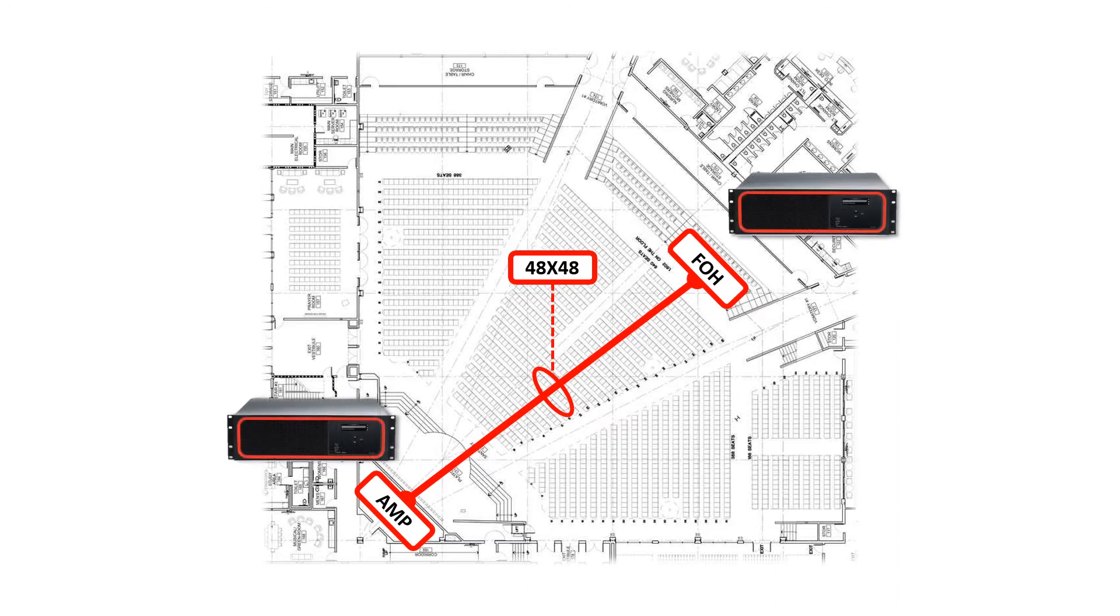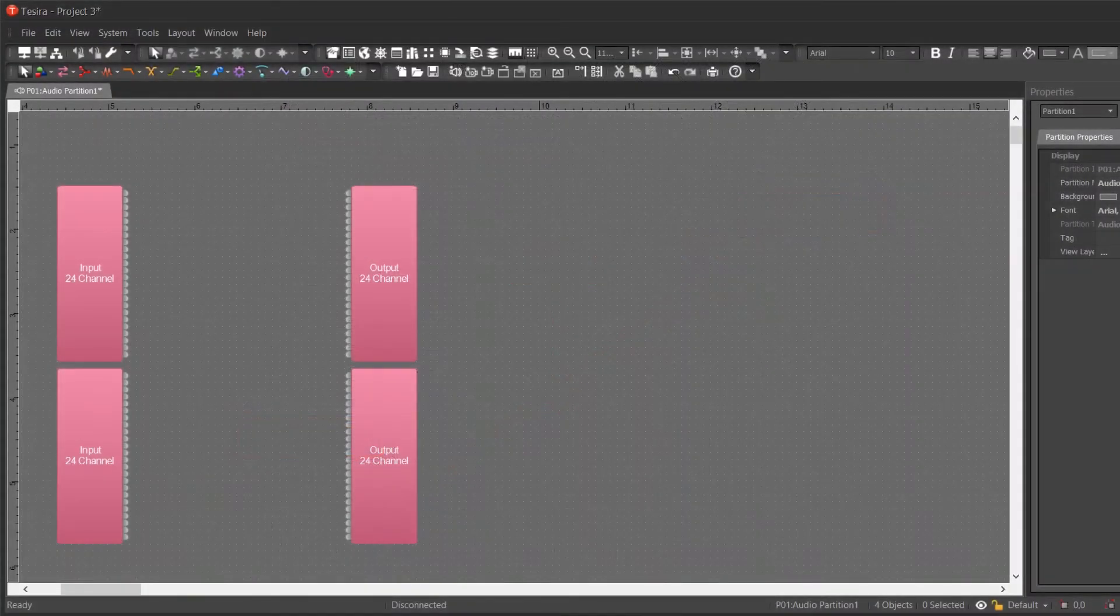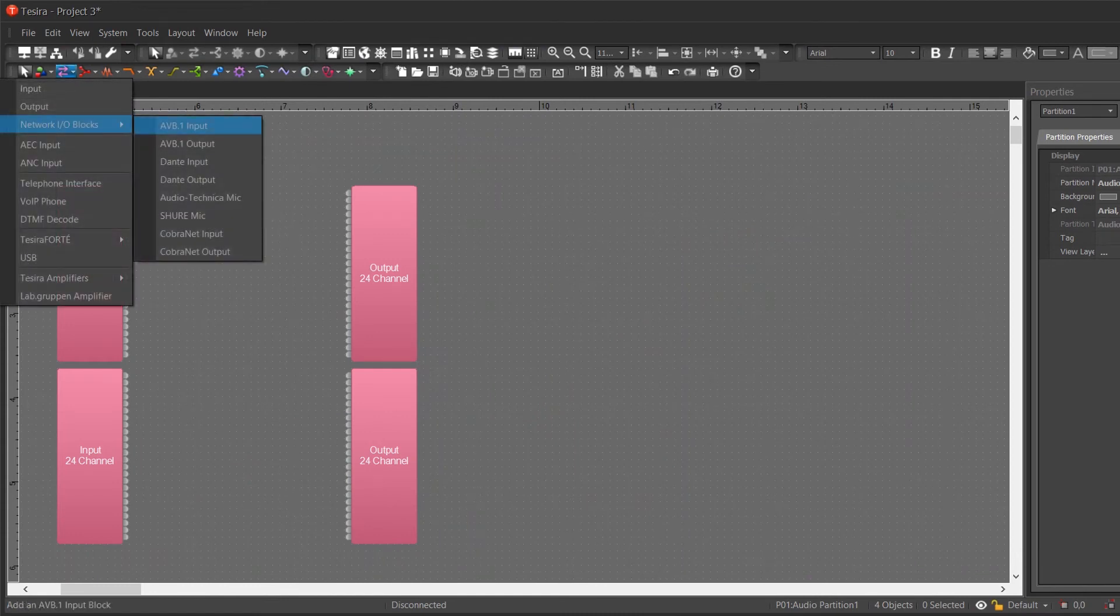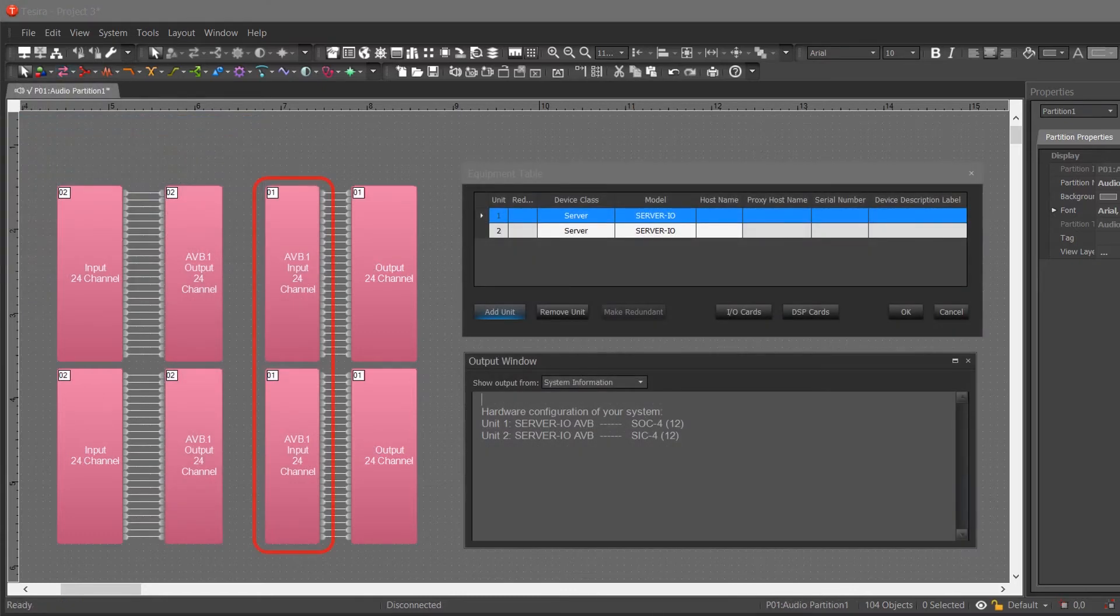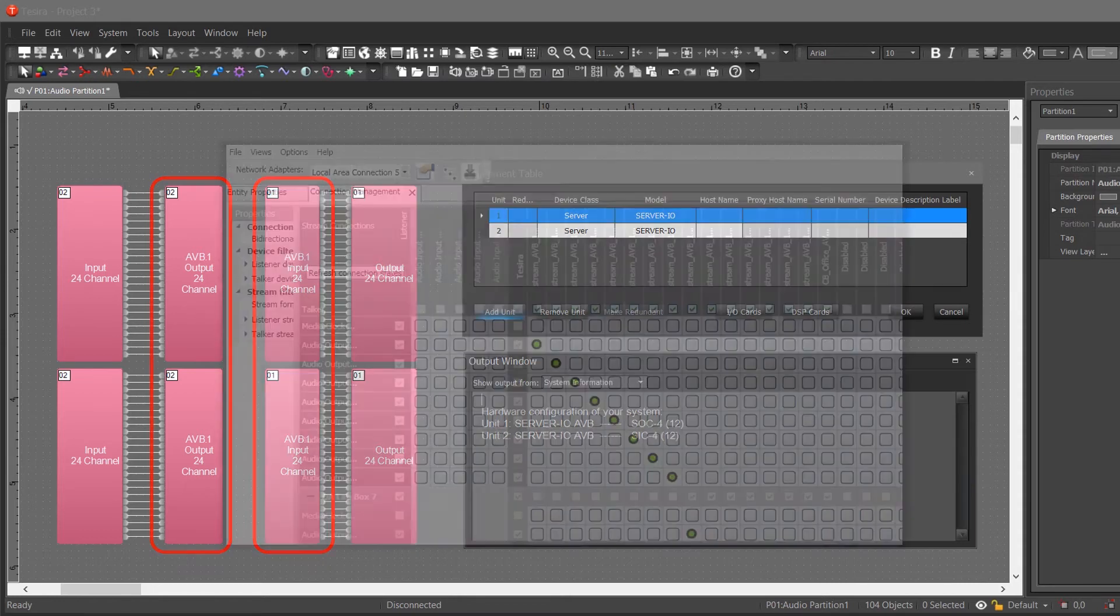In this example, we will use two server IOs to accomplish this. Here you will see inputs and outputs totaling 48 by 48. Because we have selected explicit AVB blocks for this example, we will need to set up both the talkers and the listeners. Additionally, we will need to use a third-party AVB manager to assign each input to its respective output, which is analogous to configuring a matrix mixer. This can be a highly time-consuming task as it requires a considerable amount of configuration.